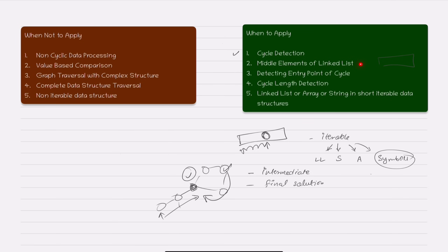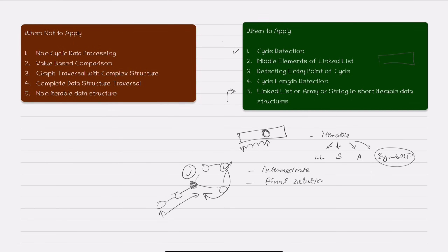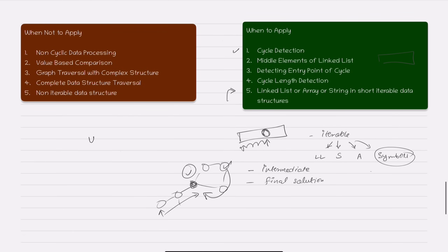Such questions might be phrased as scenario-based problems; you just need to map the scenario to the data structure and apply the pattern. Regarding when NOT to apply: first, non-cyclic data processing — if the data structure cannot have a cycle, there is no need for slow and fast. Second, value-based comparison — as already discussed, for value-based comparisons you are better off using the two-pointer pattern or some other approach, because slow and fast is mainly looking for structural traits, not values.